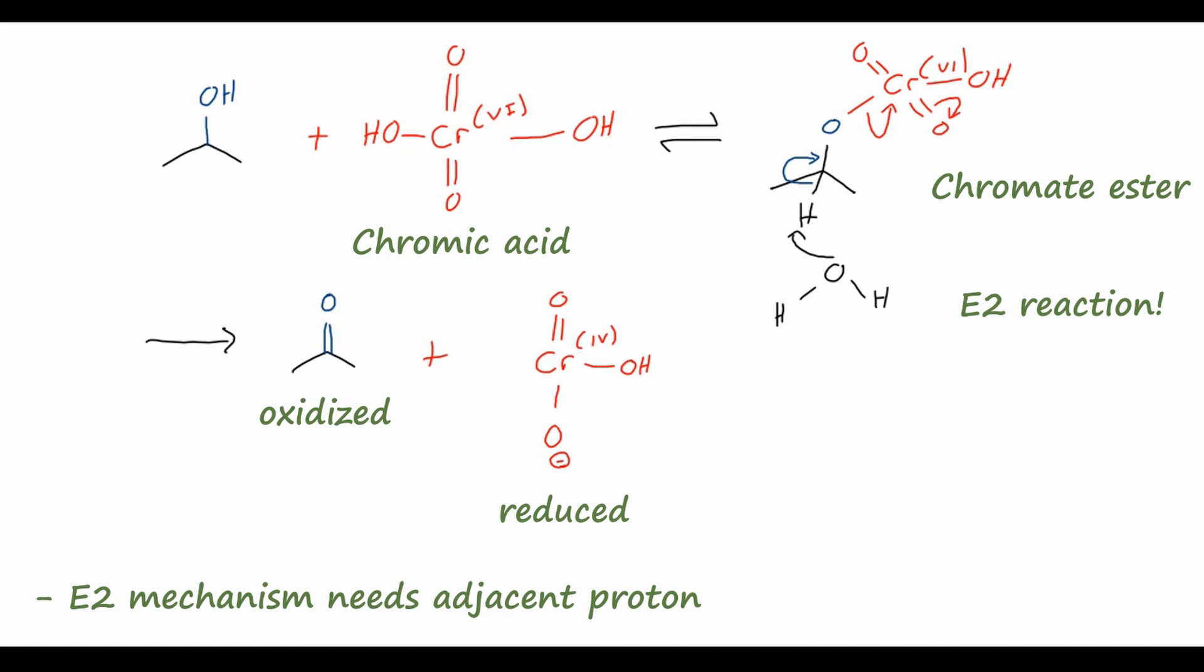An important part of this mechanism is that we need an adjacent carbon that has a hydrogen on it in order to oxidize in this sort of E2 mechanism. So there needs to be a proton there to pull off in order to accomplish this reaction. So that is why tertiary alcohols cannot react at all, because there is no hydrogen on that carbon to pull off in an E2 mechanism. And similarly, with primary alcohols, there are actually two protons that we can pull off. So what happens is an E2 mechanism occurs, we oxidize it to the aldehyde, and then we can actually form another intermediate and oxidize again to the carboxylic acid.